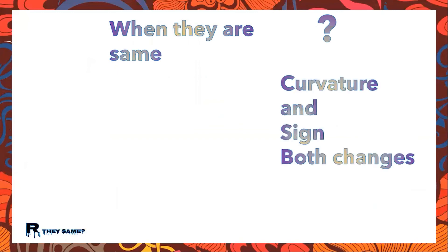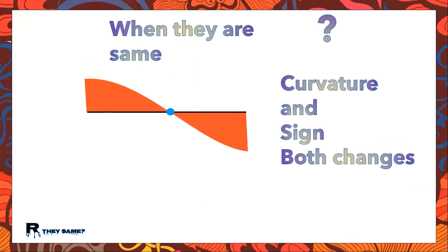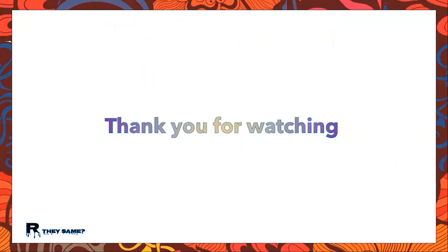They are the same when the curvature and the sign both change together. Like in this figure, the curvature of the bending moment changes at this point from convex upward to concave upward, and it also changes its sign at this point. That is why it is called both a point of inflection and a point of contraflexure. Thank you for watching.